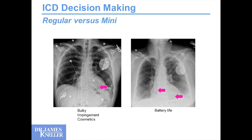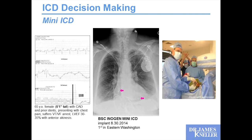I can also decide: should I put in a mini ICD? We have a normal ICD with normal battery life, and smaller versions of that ICD. You consider that for smaller individuals — less battery life, but perhaps the best choice for some people, for bulkiness, impingement, and cosmetic purposes. This mini ICD is the Boston Scientific Intigen Mini ICD. We actually implanted the first device in eastern Washington back in 2014, for a lady who came in with a V-fib arrest and is 5'1" tall — very petite. That small profile can be helpful in that context.